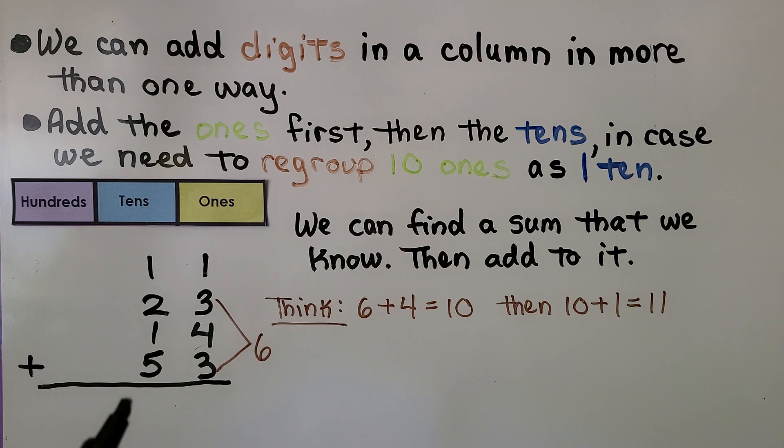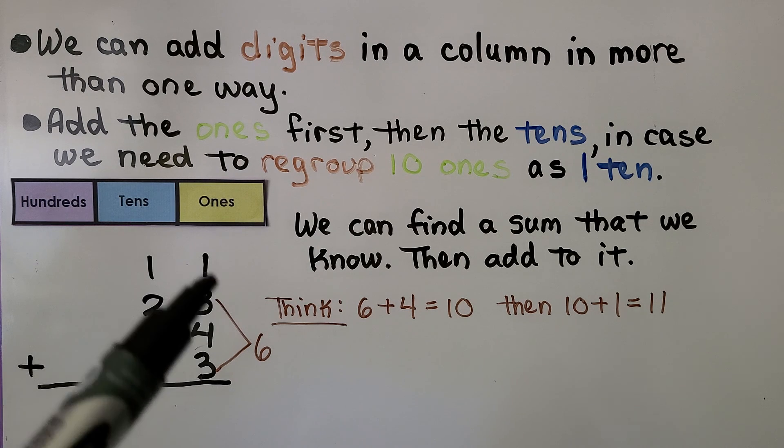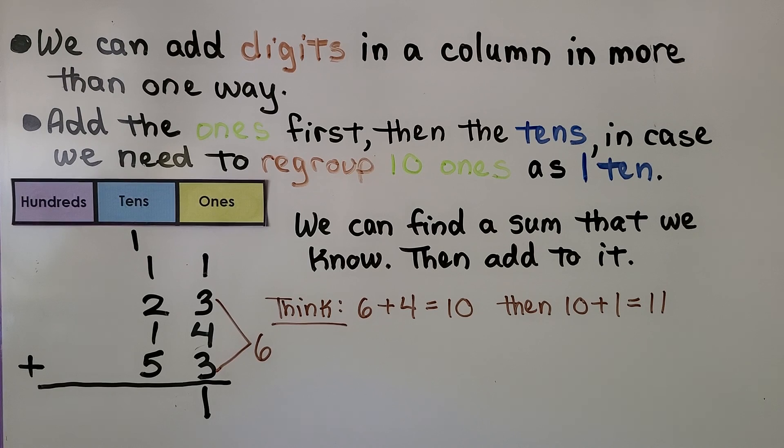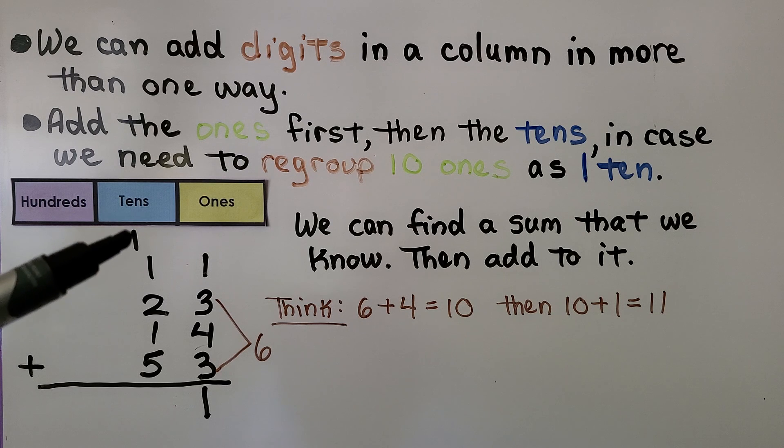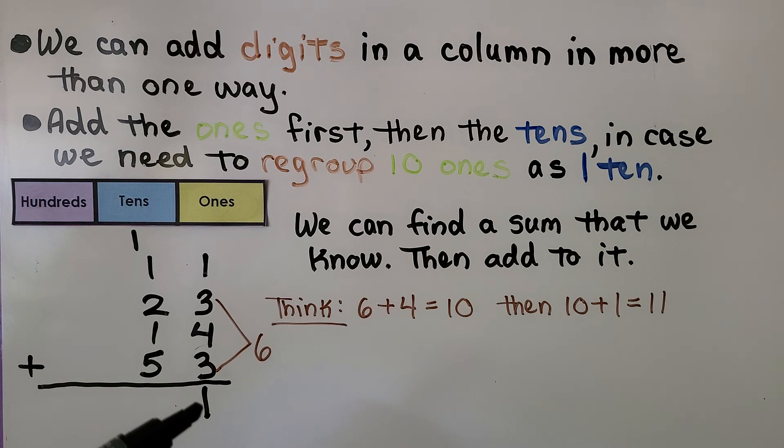We know 3 plus 3 is 6, and 6 plus 4 is 10. Then we think 10 plus this 1 up here, because we can add in any order. 6 plus 4 is 10, plus 1 more is 11. 11 is 1 ten and 1 one. We write the 10 up here in the tens column. We regroup it. We put the 1 in the ones place.